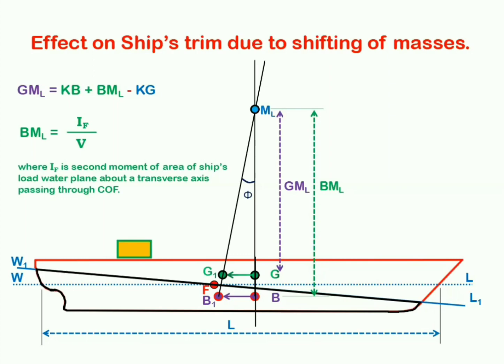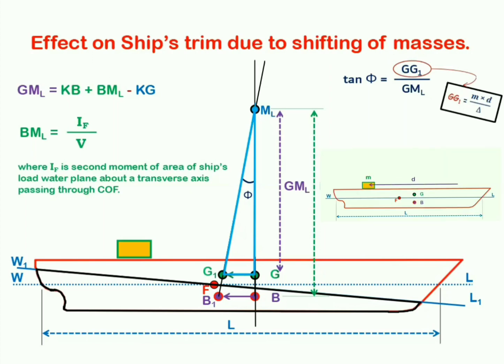Now, phi is let's say being the angle of trim. Just by looking at the triangle GG1ML, we can say that tan phi equals GG1 upon GM longitudinal. But we are aware that GG1 is well expressed as m into d divided by delta. Here, I hope you still remember, we were talking all about the effect of shifting of any particular mass onto the ship's trim. And we realized that center of gravity shifted by an amount GG1, whose magnitude is well given by m into d divided by delta.